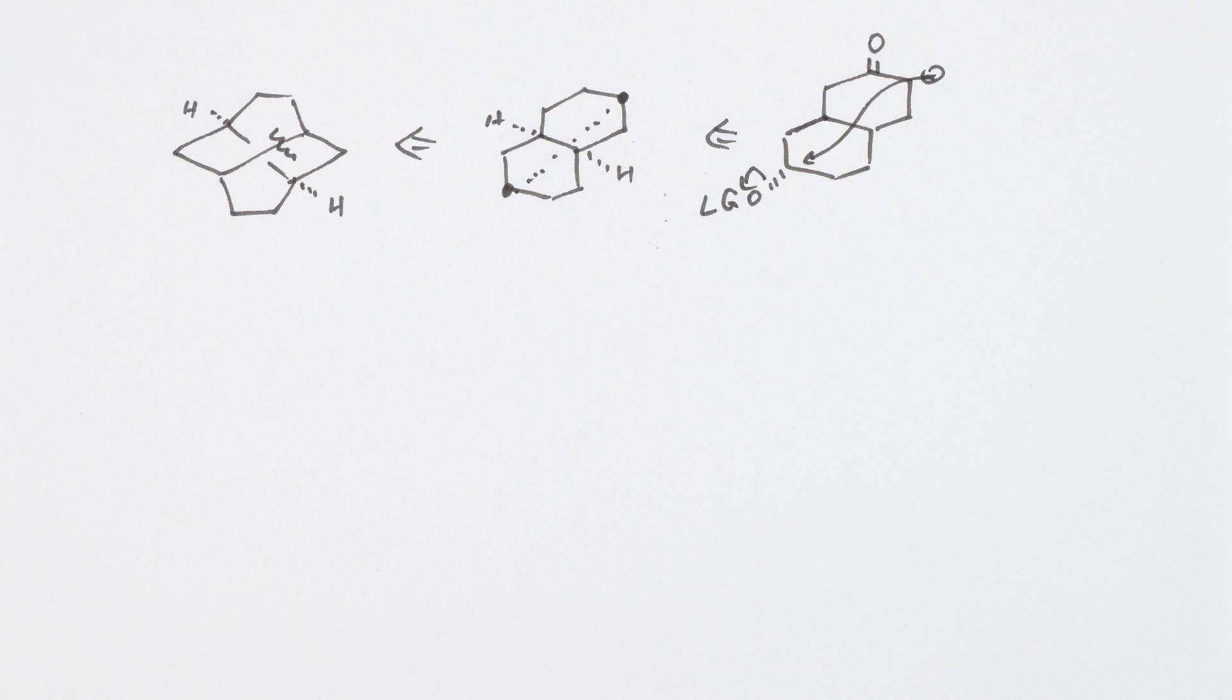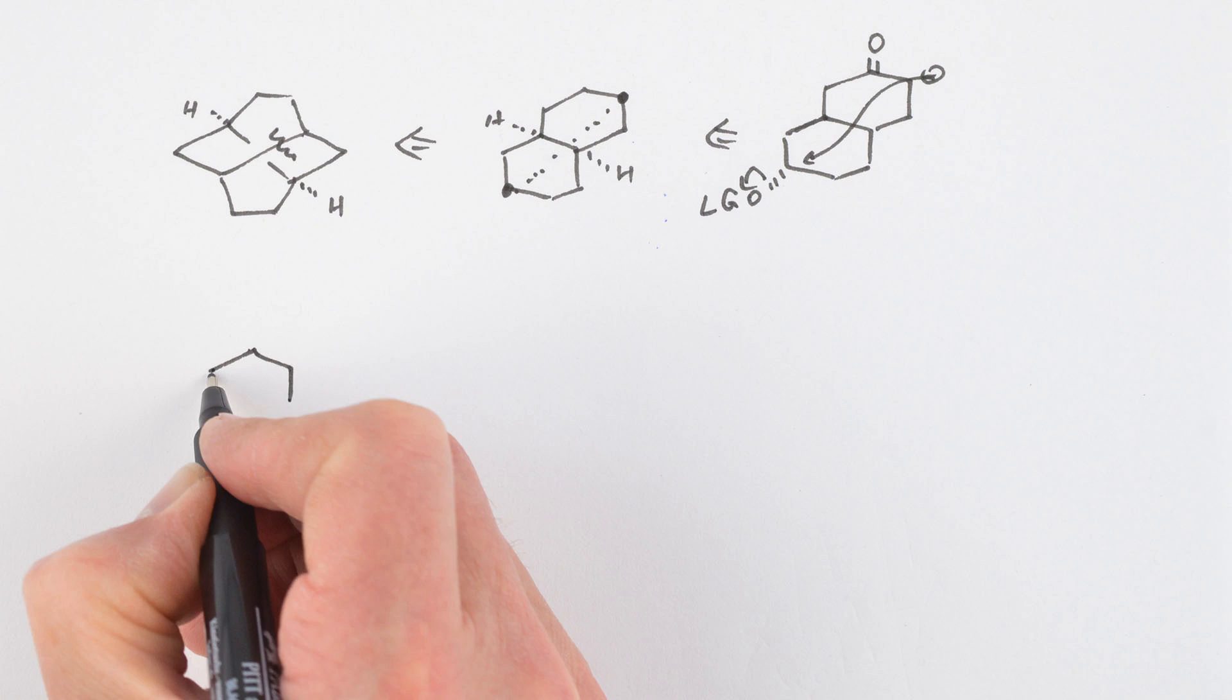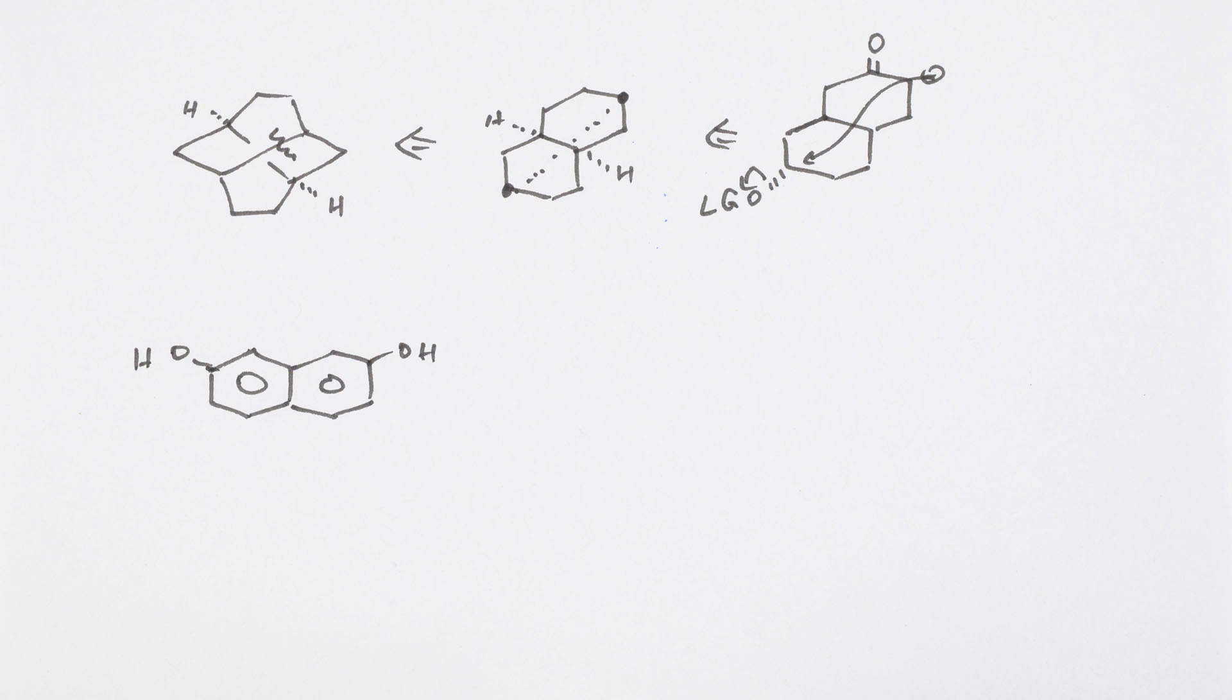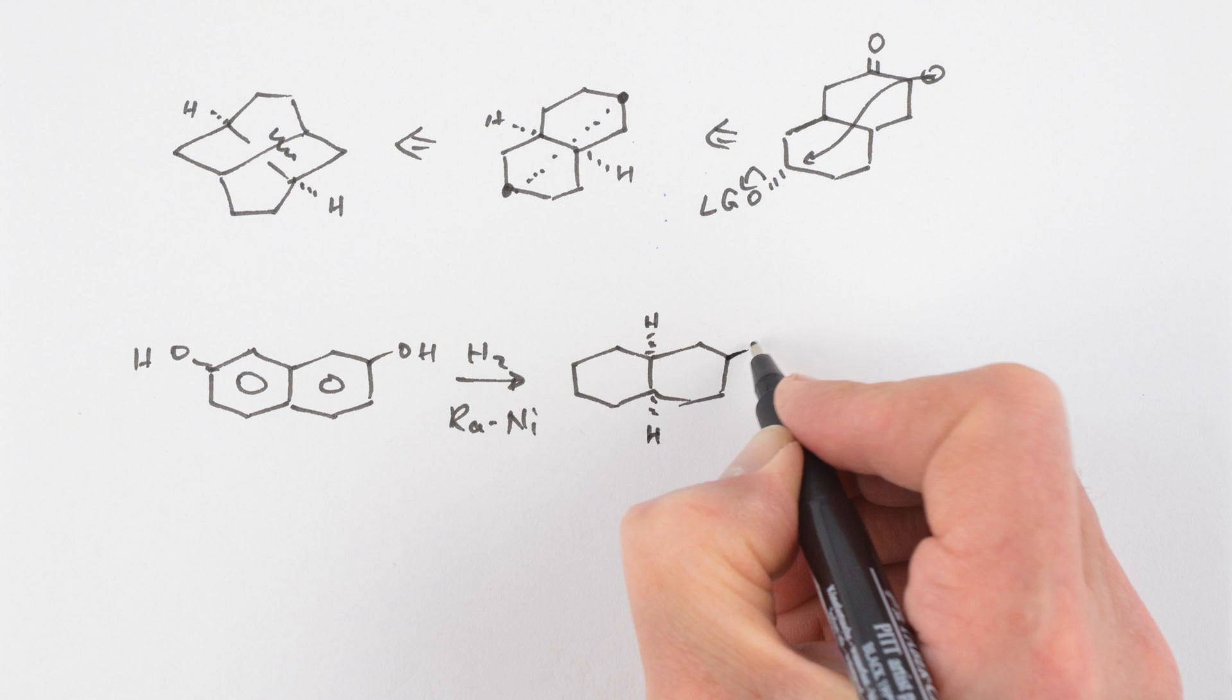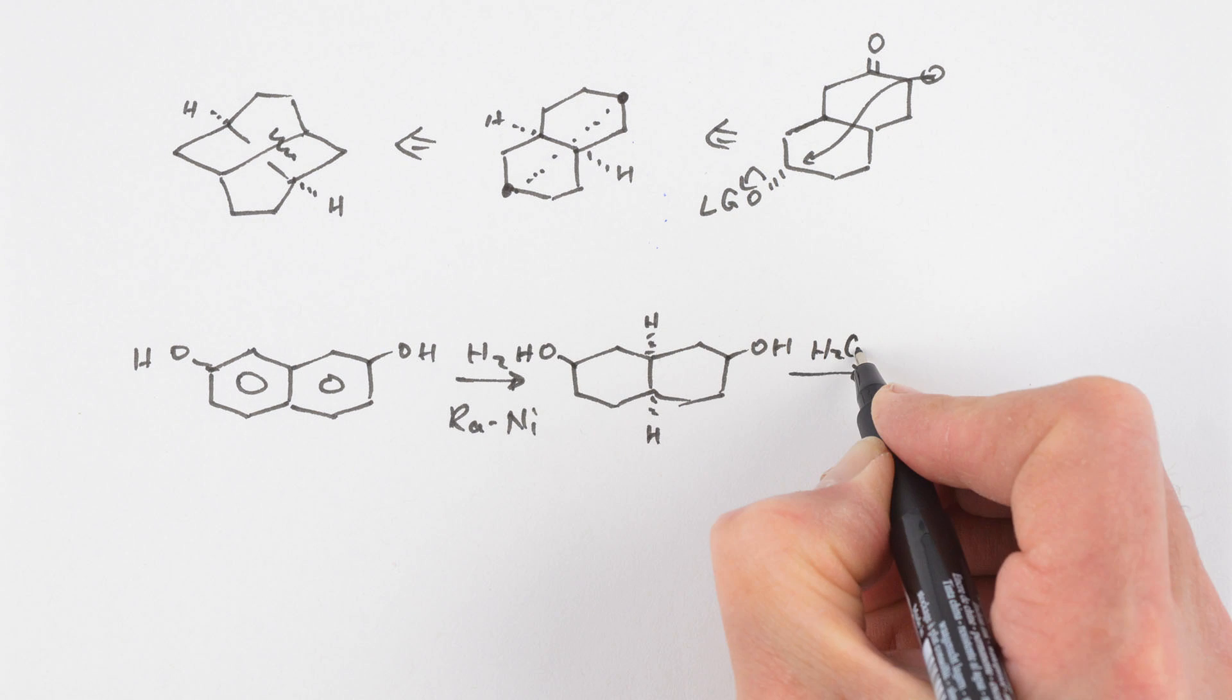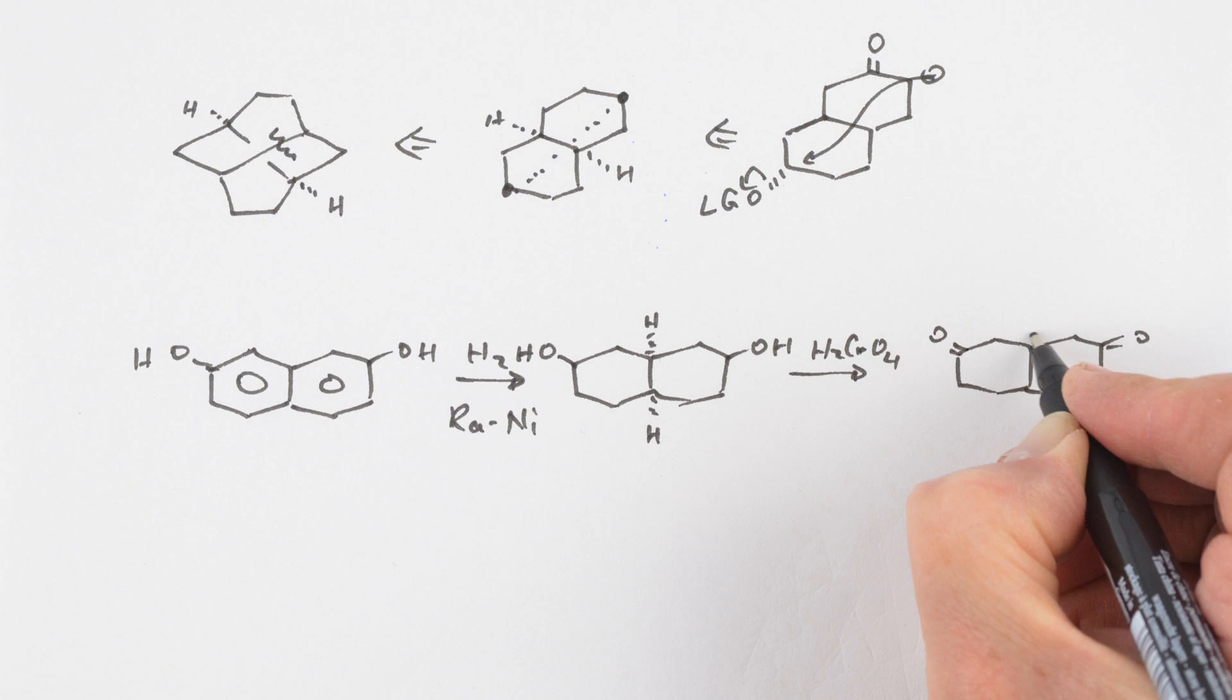How did Delenchon set the system up? His starting material is the readily available 2,7-dihydroxynaphthalene. Catalytic hydrogenation over rainy nickel gave the cis-decaline diol, which was oxidized to the diketone with chromic acid.